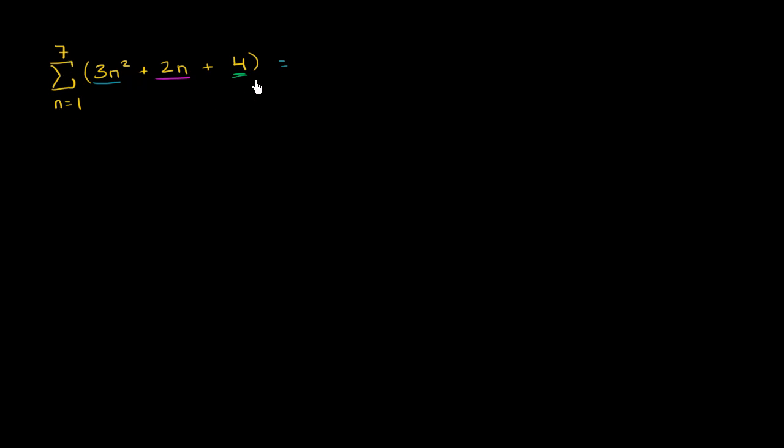Let's try to find the sum of this, or let's try to evaluate this expression right over here. So we're evaluating what this sum turns out to be. Now there's a bunch of ways to do this. You could literally just do it by brute force. You could see what this equals when n equals 1, when n equals 2, all the way to n equals 7. And that would be completely legitimate.